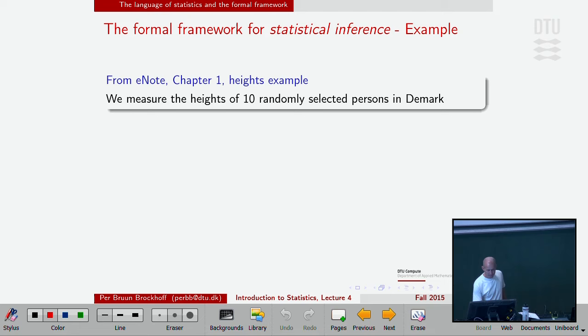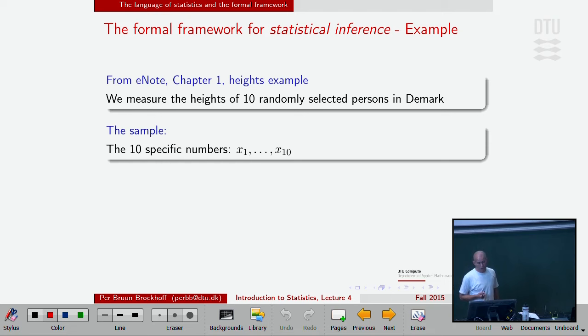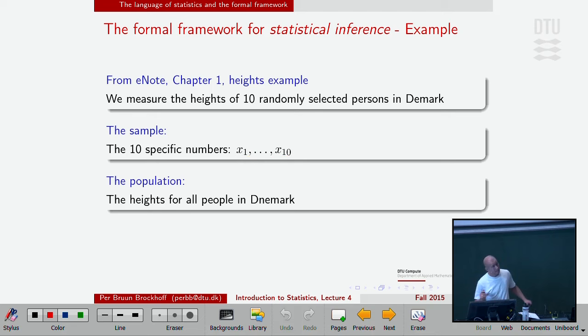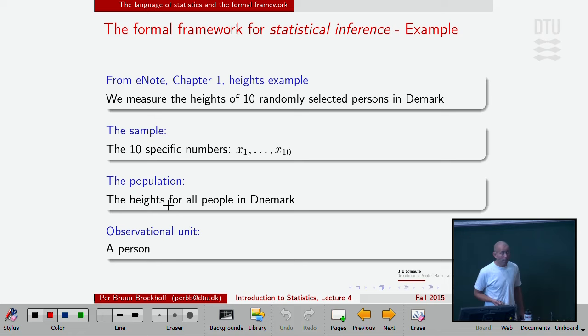An example of this formal framework: the heights example. We measure the heights of ten randomly selected persons from Denmark. The sample of course would then be the ten numbers in our hands, in our computer. The statistical population are then the heights for all people in Denmark, say. So we define that to be our population in this case. The observational unit is still a person.